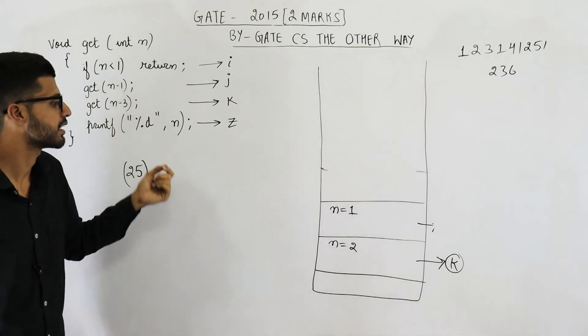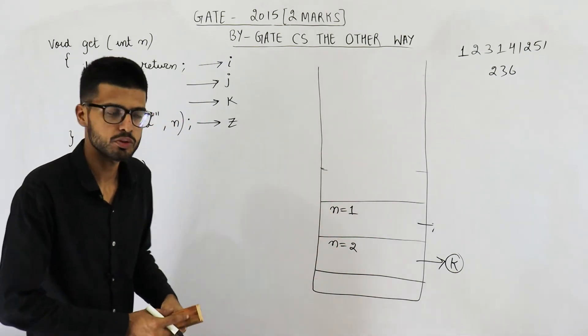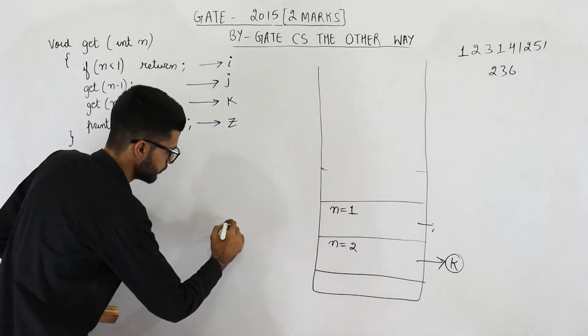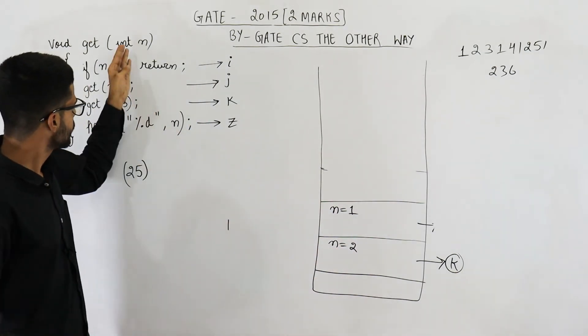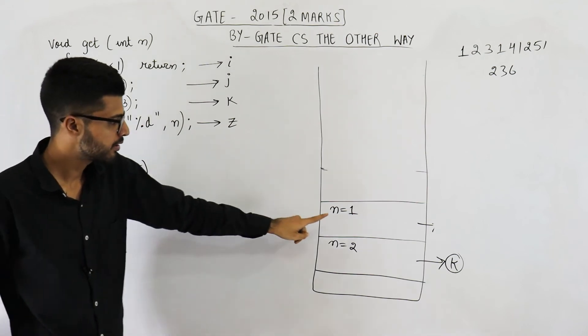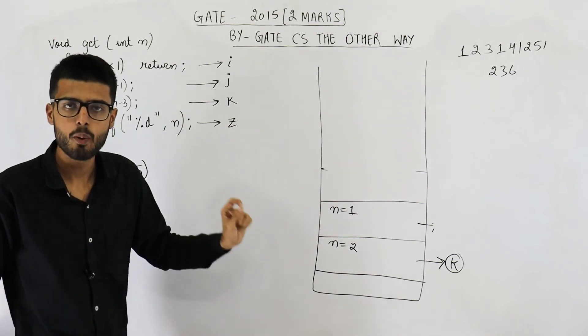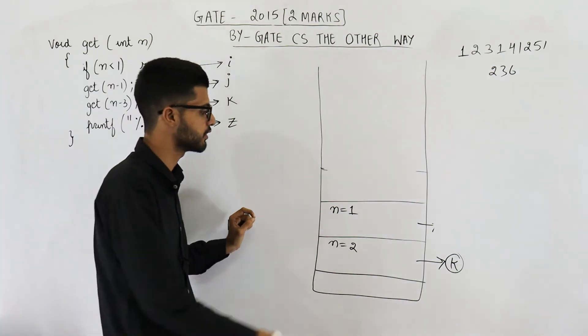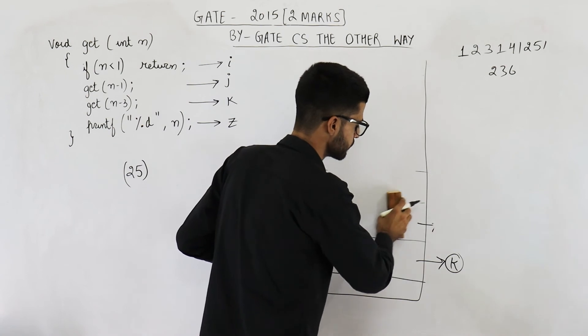It says print n. So n is 1 — what is printed? 1. Now you can see this function has ended, so pop the current activation record.